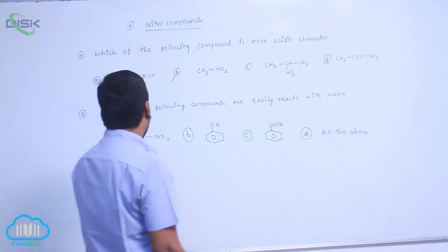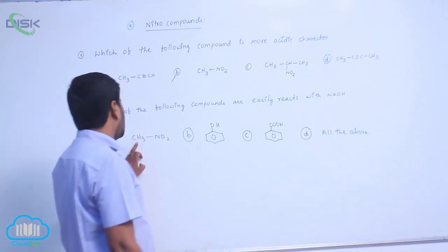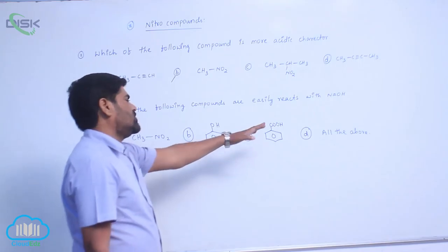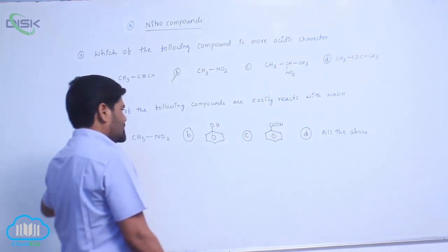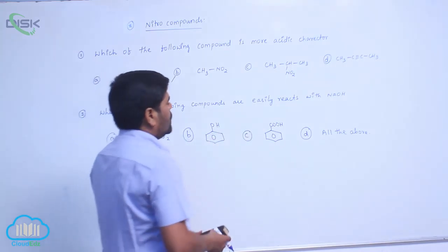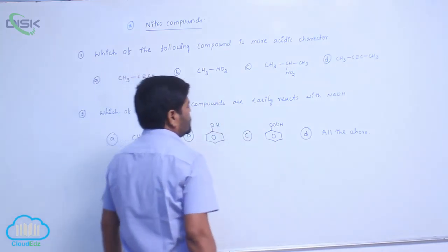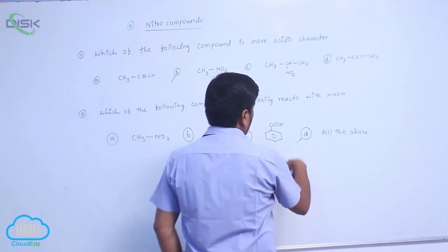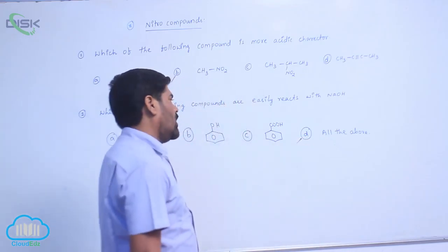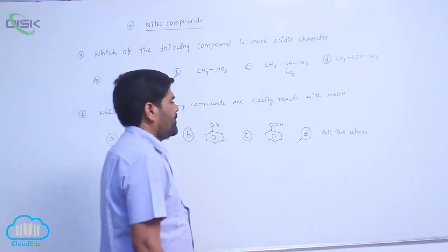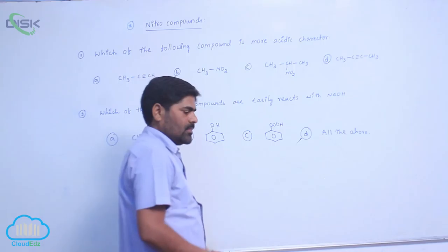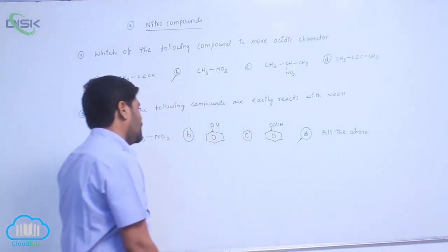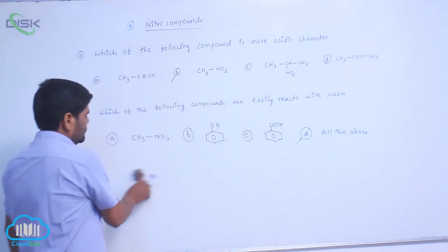Nitromethane is acidic, phenol is acidic, and benzoic acid is also acidic. All of these are acidic compounds, so all of them easily react with sodium hydroxide. Therefore, the answer is D — all of the above.